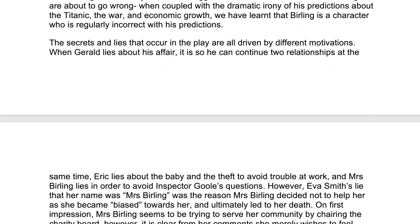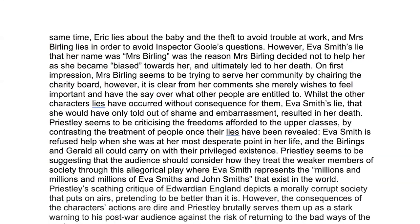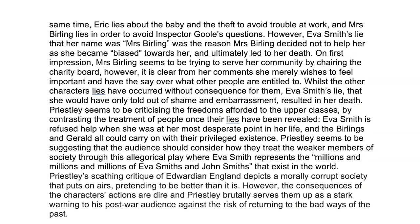The secrets and lies that occur in the play are all driven by different motivations. When Gerald lies about his affair, it is so he can continue two relationships at the same time. Eric lies about the baby and the theft to avoid trouble at work, and Mrs. Birling lies in order to avoid Inspector Goole's questions. However, Eva Smith's lie that her name was Mrs. Birling was the reason Mrs. Birling decided not to help her, as she became biased towards her and ultimately led to her death. On first impression, Mrs. Birling seems to be trying to serve her community by chairing the charity board. However, it's clear from her comments she merely wishes to feel important and have the say over what other people are entitled to. Whilst the other characters' lies have occurred without consequence for them, Eva Smith's lie — which she would have only told out of shame and embarrassment — resulted in her death. Priestley seems to be criticising the freedoms afforded to the upper classes by contrasting the treatment of people once their lies have been revealed.